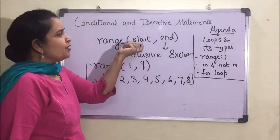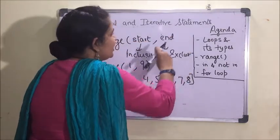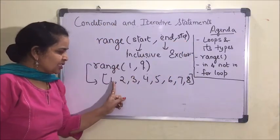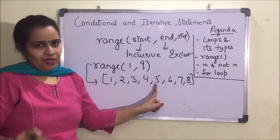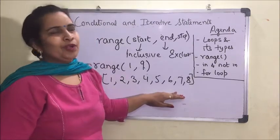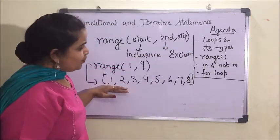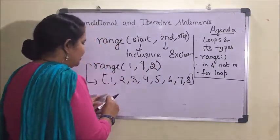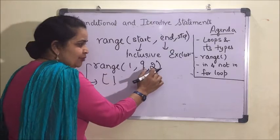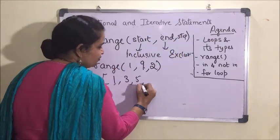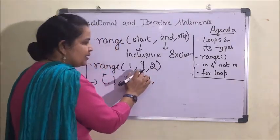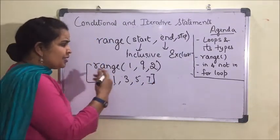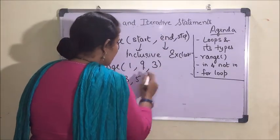In range, we have a start argument, an end argument, and the last one is step. If we are not mentioning the step value, by default step is 1 — just like step counting from primary school. If you set the step value to 2, it will start from 1 and jump two steps: 1, 3, 5, 7 — and since 9 is exclusive it will not be included. So range(1, 9, 2) returns 1, 3, 5, 7.